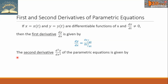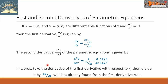Now, the second derivative of the parametric equations is given by this equation. This is equal to 1 over dx over dt, times d over dt of the first derivative dy over dx. In words, take the derivative of the first derivative with respect to x, then divide it by dx over dt, which is already found from the first derivative rule.